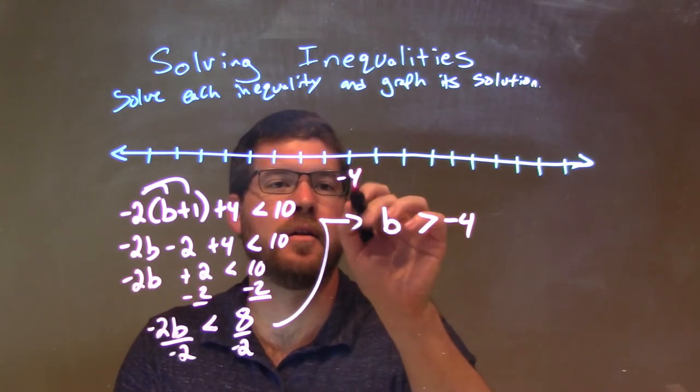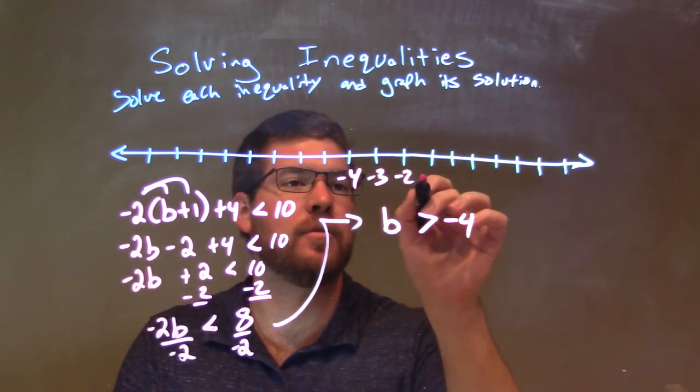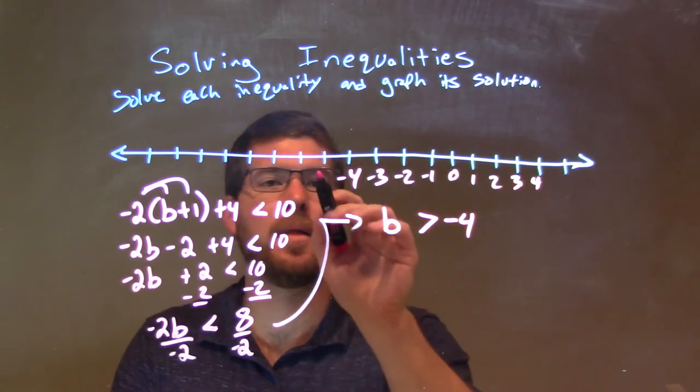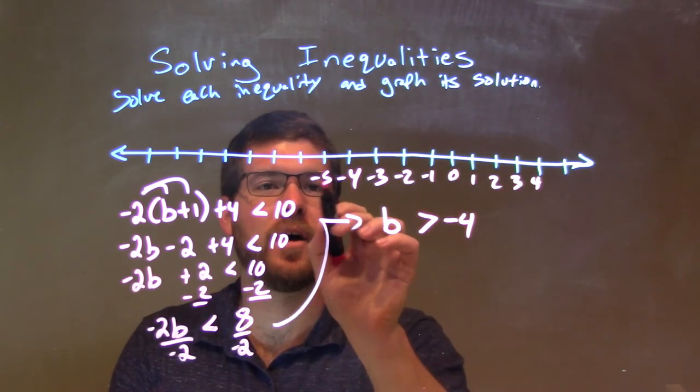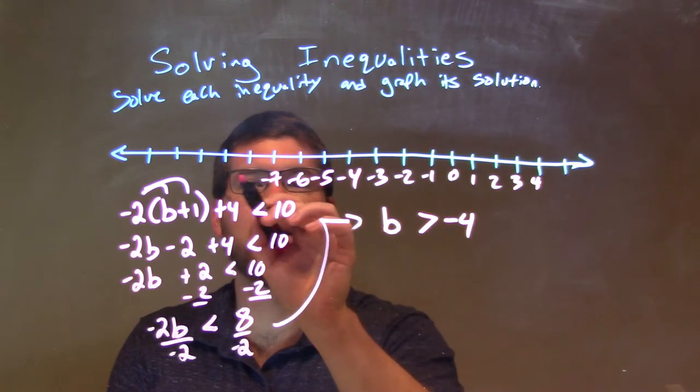Let's put negative 4 right here in the middle. Negative 3, negative 2, negative 1, 0, 1, 2, 3, 4. Negative 5, negative 6, negative 7, negative 8.